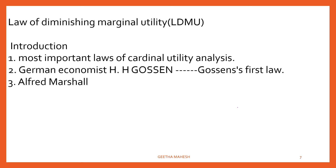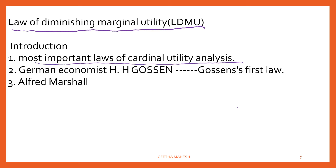Now let us discuss the law of diminishing marginal utility. It is the most important law of cardinal utility analysis. It was given by the German economist H.H. Gossen, and is also known as Gossen's first law. Later it was developed and popularized by Alfred Marshall.